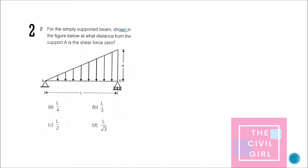Next question: for a simply supported beam shown in the figure, at what distance from support A is the shear force zero? Since it is a simply supported beam with a triangular load, one third of the load will be taken by Ra and two thirds will be taken by Rb. This is a shortcut method, but you can also use the conventional way.